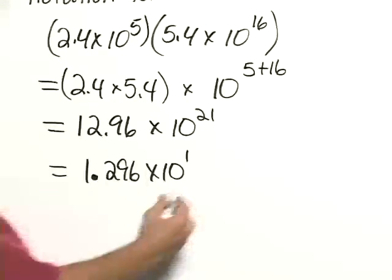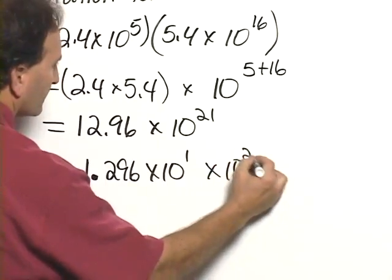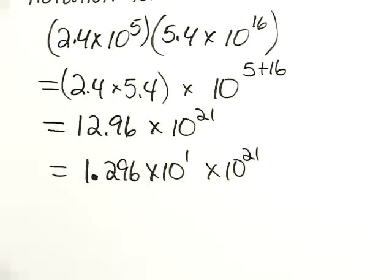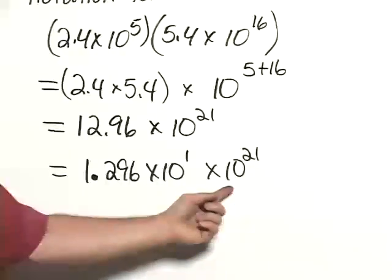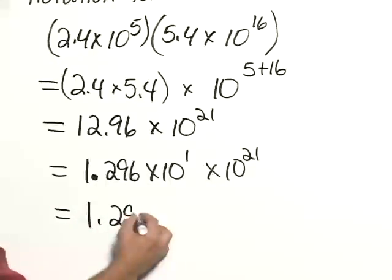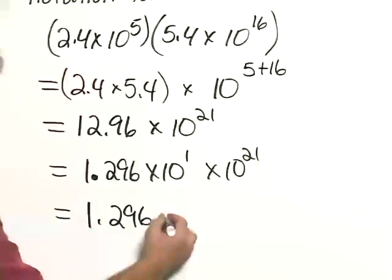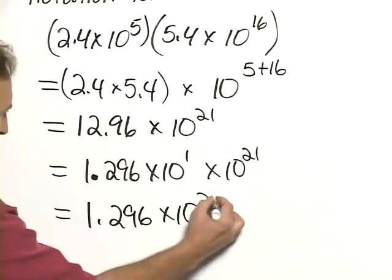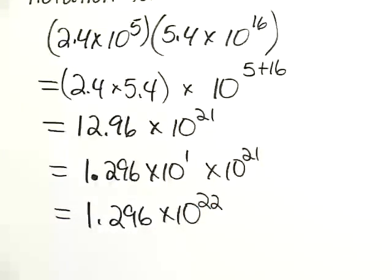So now, when we multiply the 10 to the 1st times 10 to the 21st, we add those powers, so our final answer would be 1.296 times 10 to the 22nd power.